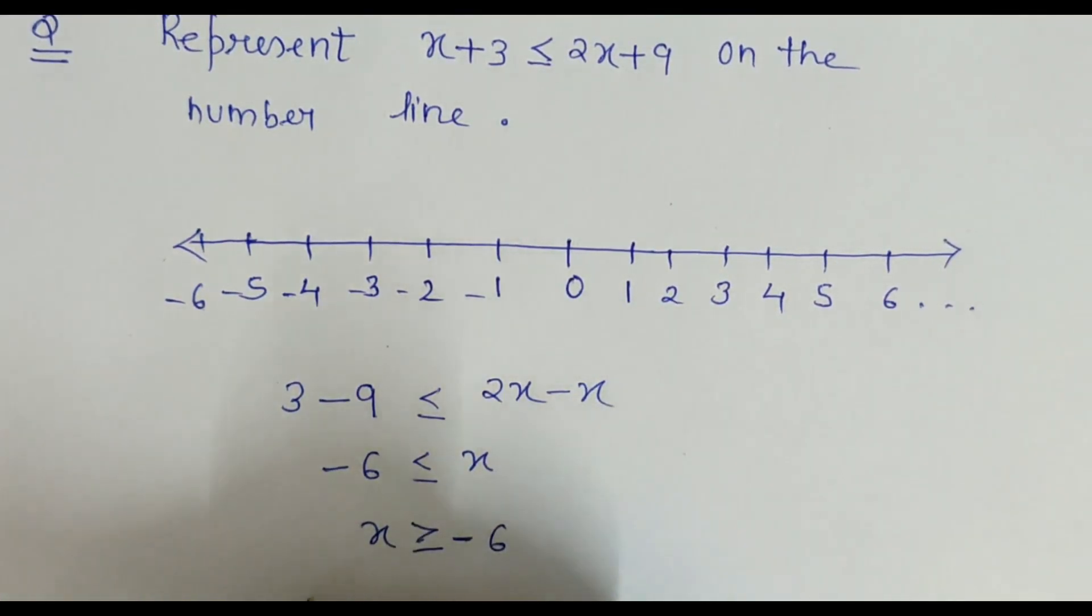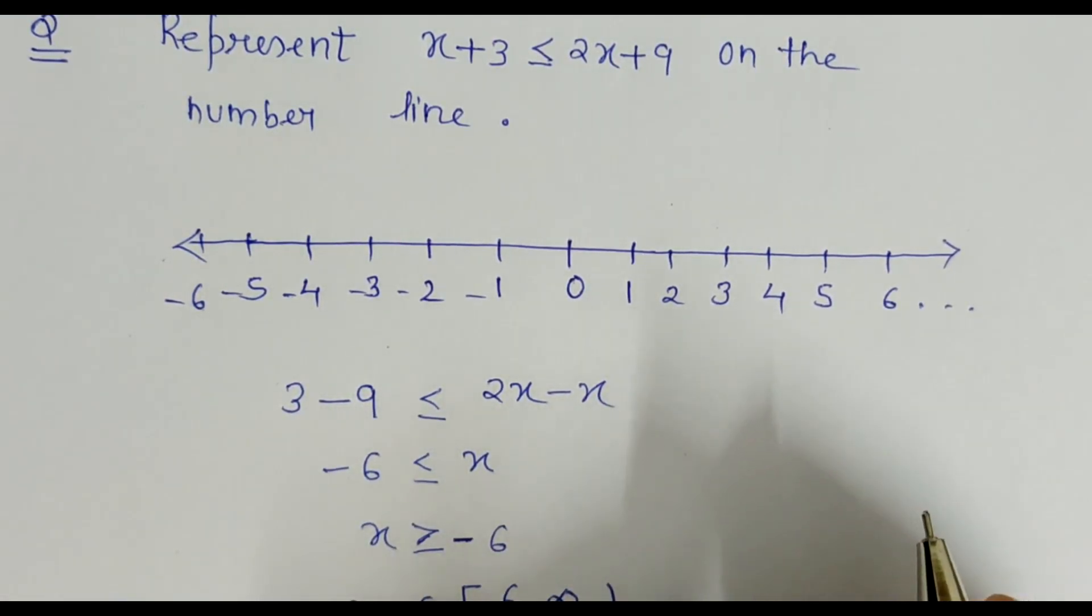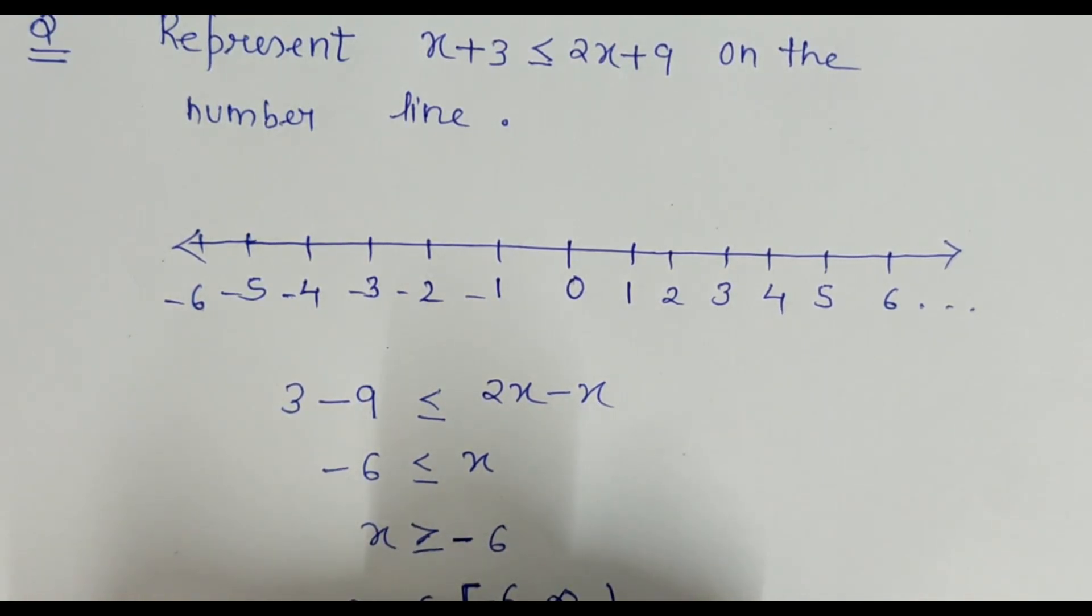x is greater than equal to minus 6 can be written as x belongs to closed interval minus 6 to infinity, because from negative numbers, greater goes towards minus 5, minus 4, minus 3, 0, 1, 2, 3 and so on. So it is minus 6 to infinity, and closed interval because I have equal sign as well.